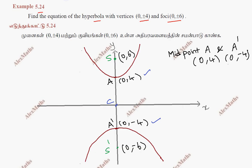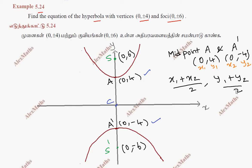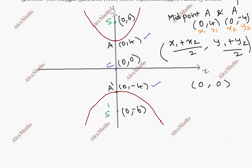Using the midpoint formula: x = (x1 + x2)/2, y = (y1 + y2)/2. Substituting: (0 + 0)/2 = 0, and (4 + (-4))/2 = 0. So the center is (0, 0).